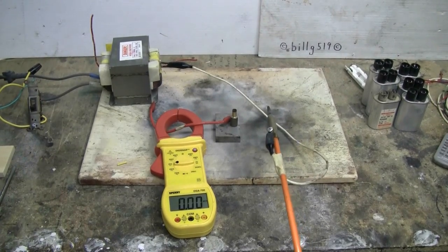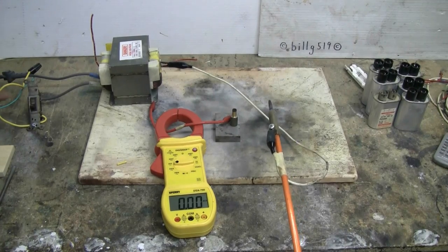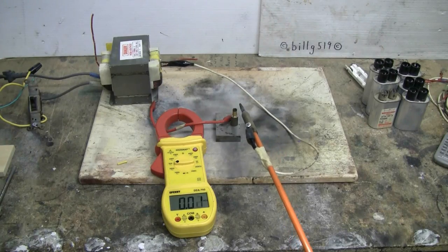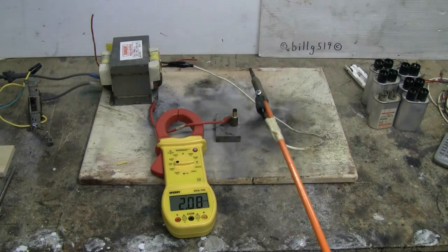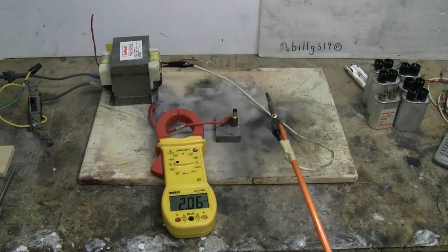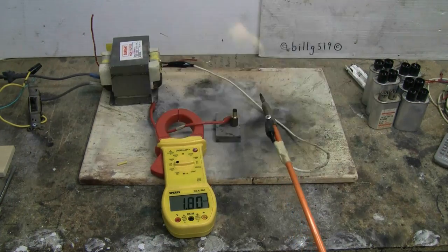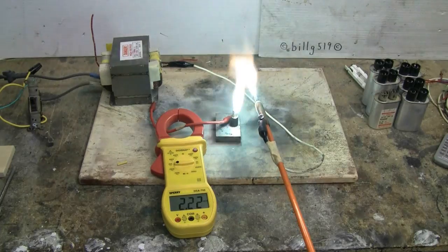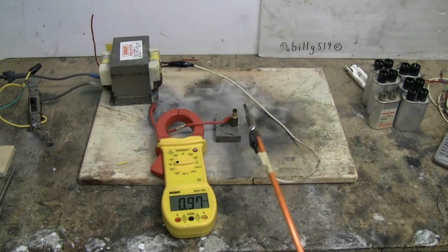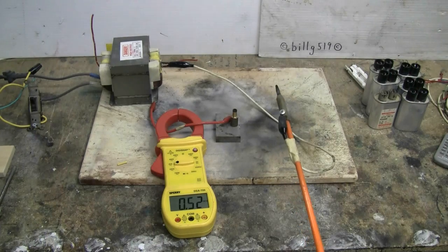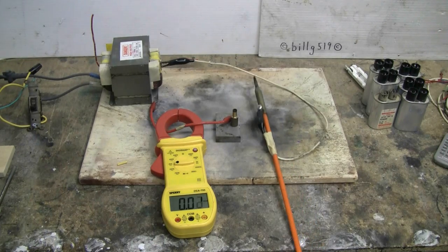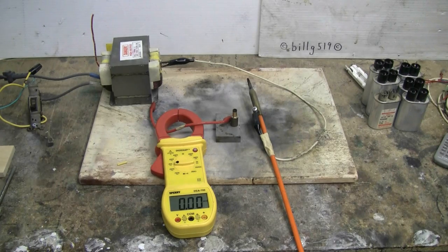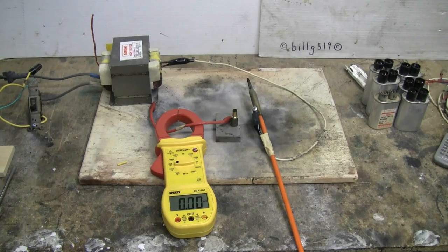Let's try the MOT with no capacitors. Let's just see what current we get. Well we're seeing around two amps with just the transformer, that's two amps on the secondary side.